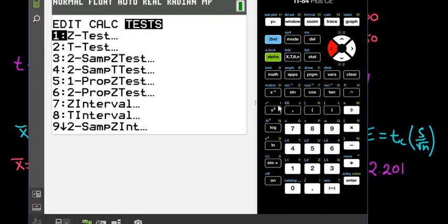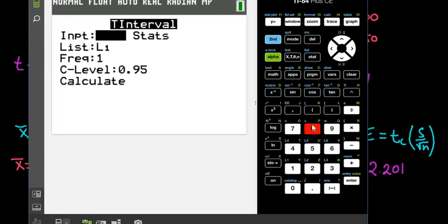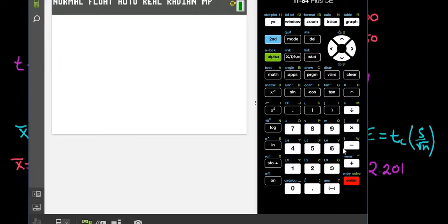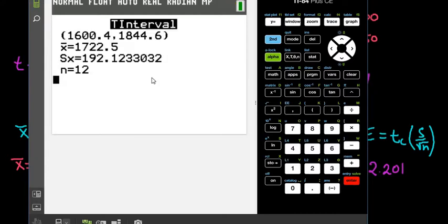We're using the T interval, so we're going to use option eight. If you accidentally select the Z interval, it would ask you for your population standard deviation, so you know you can't use that. We would put in our confidence level. I put my information into L1. I can change that if I used a different thing. Then I just hit calculate. On this screen, it will give me the mean, the standard deviation, and the interval.